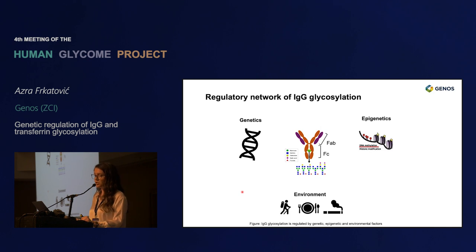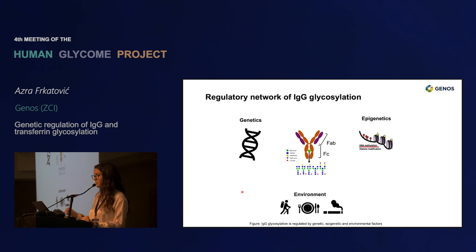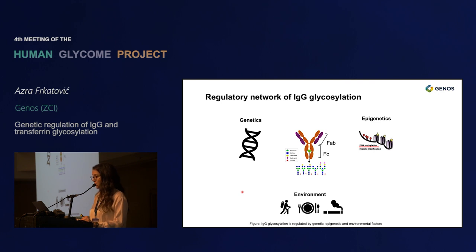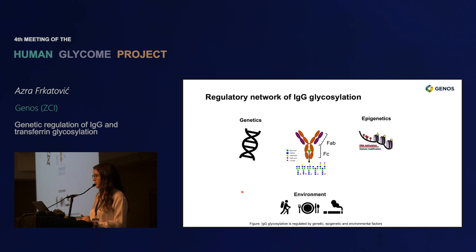For IgG glycosylation, which has two N-glycosylation sites as well as FAB glycosylation sites, we know that genetic factors as well as epigenetic layer regulation are also involved, and there is also a big part explained by the environment. In our efforts to understand the genetic background, we are utilizing genome-wide association studies. In our case, we are interested in IgG glycosylation patterns.